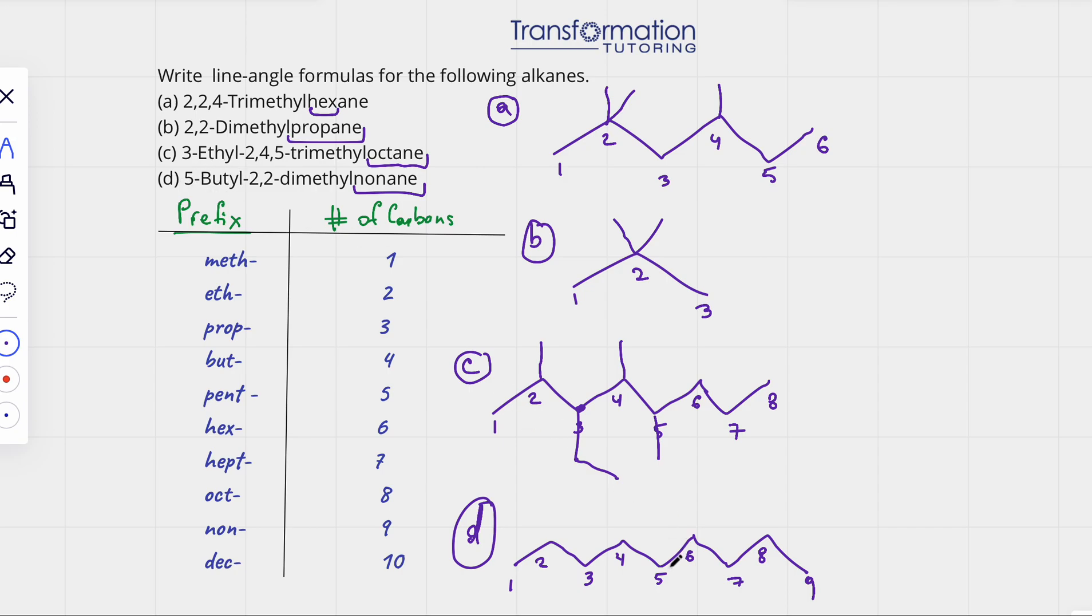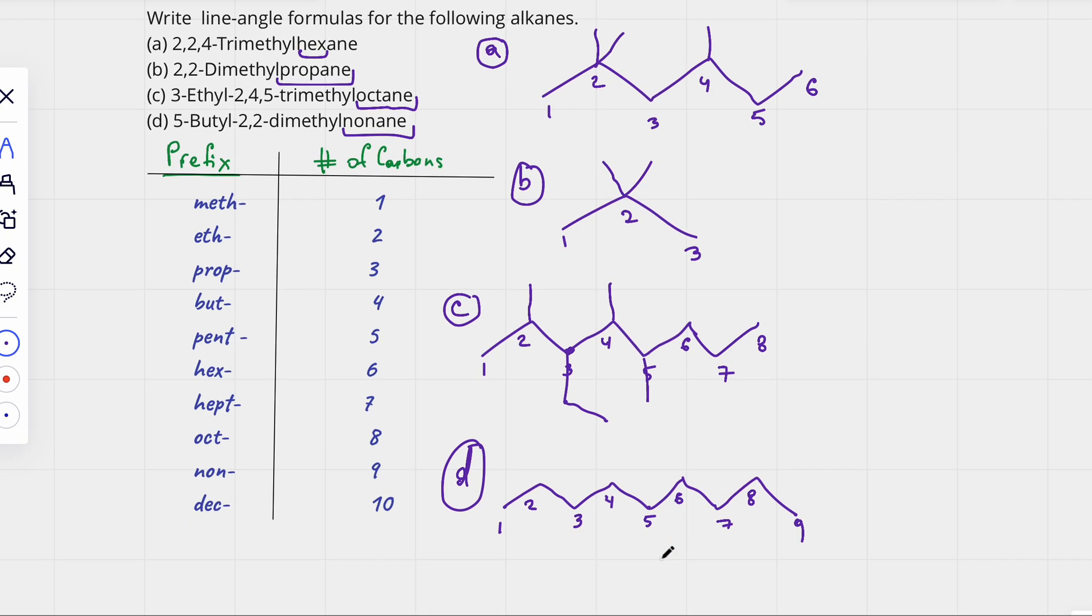5-butyl. On carbon 5, I have a butyl group. What does butyl mean? It means 4 carbons. 4 carbons are connected to carbon number 5. So how does it look? We go 1, 2, 3, 1, 2, 3, 4. That must be my 5-butyl group. There is a butyl group, 4 carbons, coming off of carbon number 5.